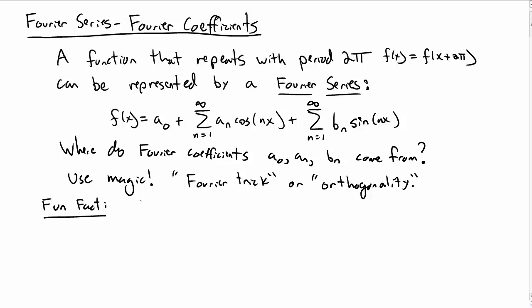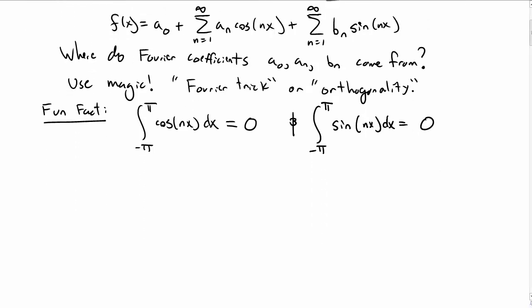So let's start with a fun fact. The integral from negative π to π of cosine of nx dx, where n is some integer. What is that? Well, if you think about it, you're integrating cosine over a whole period, and so that turns out to be zero. A similar result holds for sine of nx. You integrate sine of nx over an entire period, you also get zero.